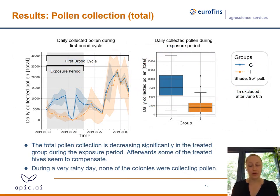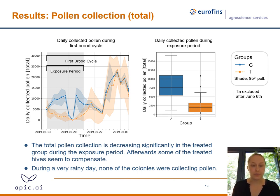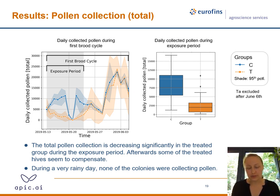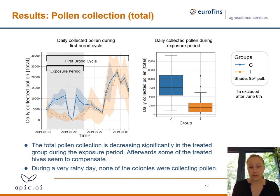We also looked at the pollen collection behavior of both the treated and control hives. The left graph shows the pollen carried into the hives per day by both groups. During the gray shaded exposure period there is a significant difference — the treated hives (yellow/orange) show substantially lower pollen collection compared to the control hives (blue), which is also emphasized in the box plot on the right. After the exposure period, however, some of the treated hives appear to try to compensate for the loss of pollen, while others do not.